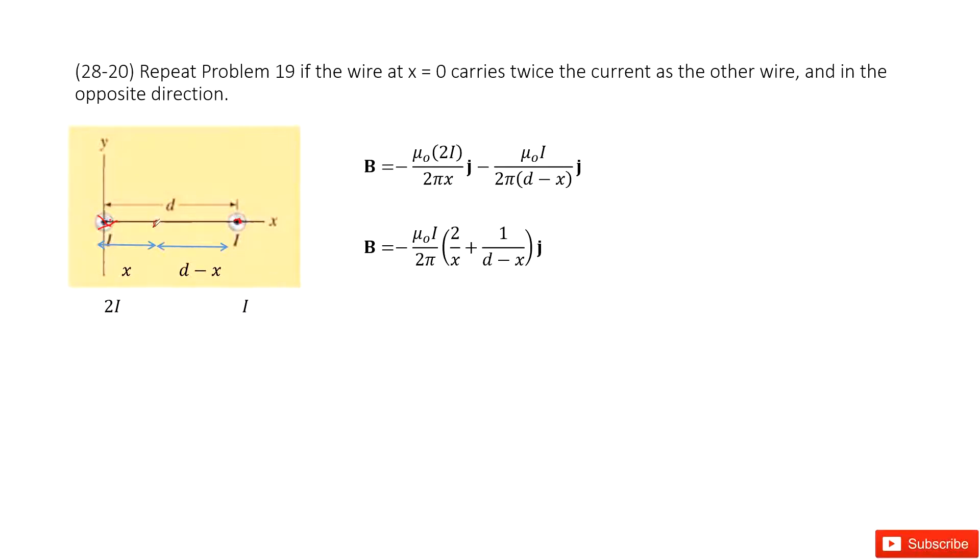And then we need to determine a magnetic field at a certain point. This point makes a distance x with wire 1. So now it makes distance d-x with wire 2, right?